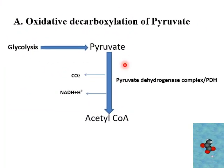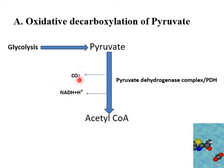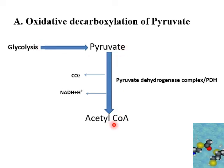So in this reaction, pyruvate is finally converted into acetyl CoA with the production of NADH and carbon dioxide. This is how glycolysis gets linked to the Krebs cycle — pyruvate coming from glycolysis is converted into acetyl CoA, which then begins the Krebs cycle.